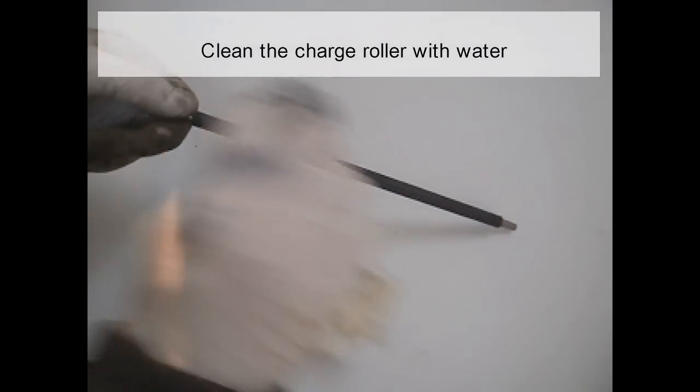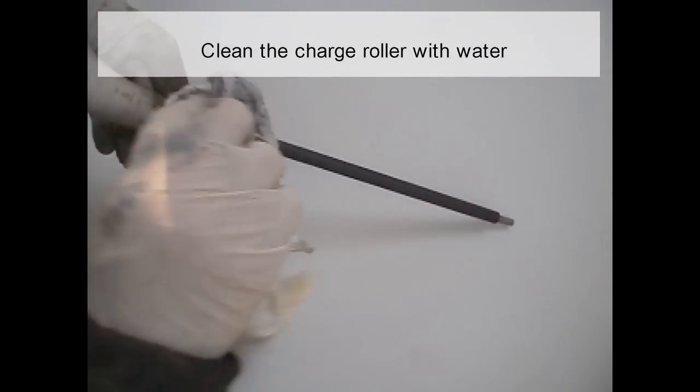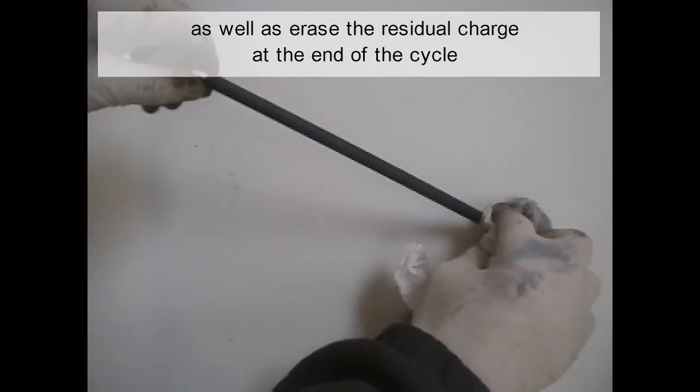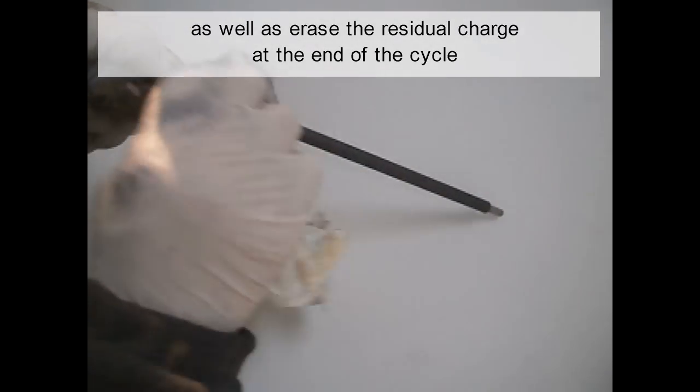Clean the charge roller with water. The charge roller places the initial charge on the drum as well as erases the residual charge at the end of the cycle.